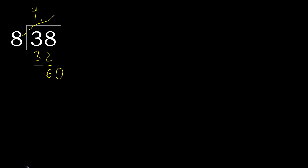8 multiplied by 8 is greater. Multiplied by 7: 56 is not greater. Subtract, remainder is 4.